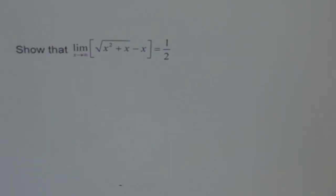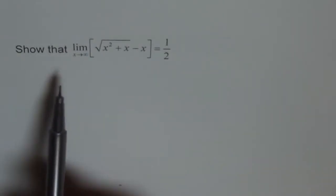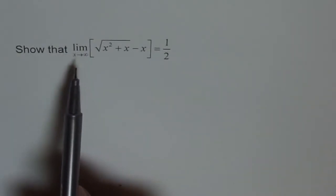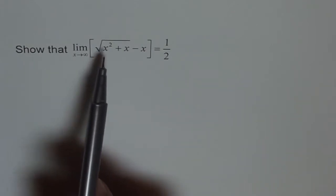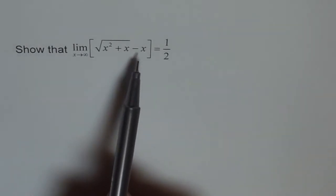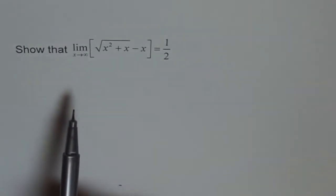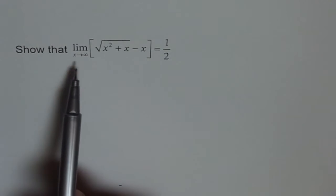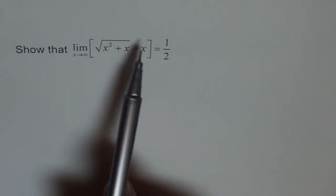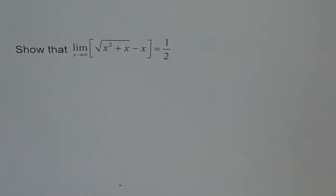This is a very interesting problem. It says show that the limit as x approaches infinity for the function square root of x squared plus x minus x is equal to half. So if you are approaching positive infinity, this function should approach a value of one half.